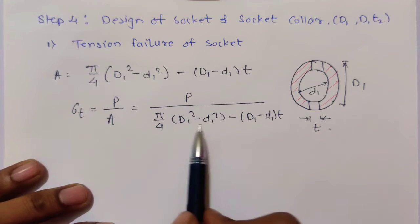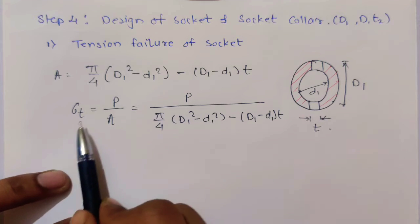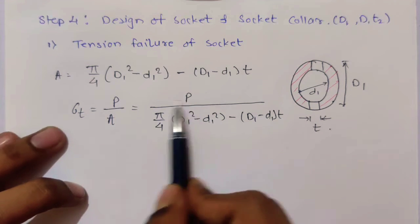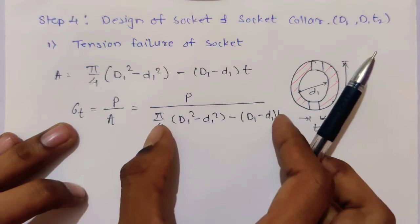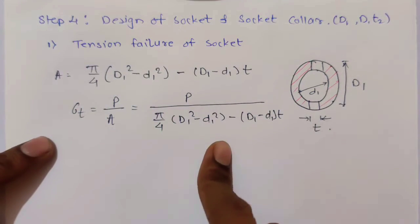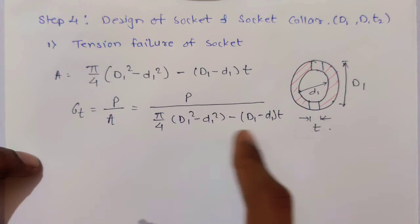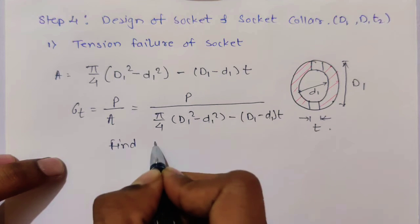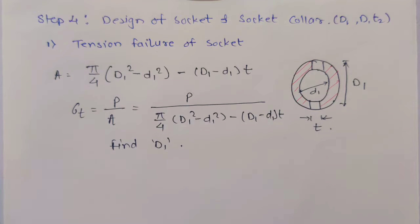Remember while solving this equation, don't put it as a denominator directly. If sigma_T has a value around 100 and the area terms give around 50 or 1000, put this equation and type sigma_T, then solve for X. If you put it as a denominator you won't get the value. So find D1 — tensile failure is done.